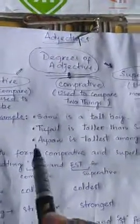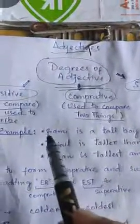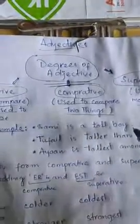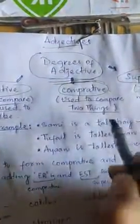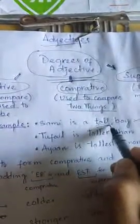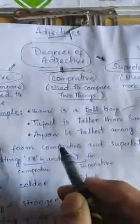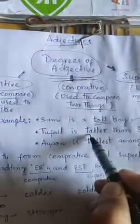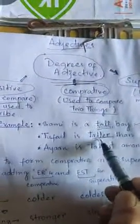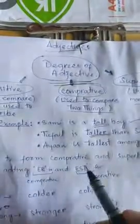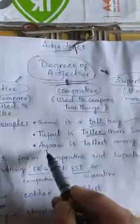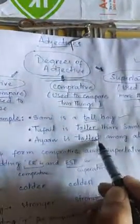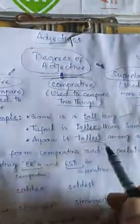Now let's have a look at these examples. The first example is: Sami is a tall boy. The adjective used here is 'tall.' The second example is: Tufail is taller than Sami. The adjective used here is 'taller.' The third example is: Ayan is the tallest among all. The degree of adjective used here is 'tallest.'